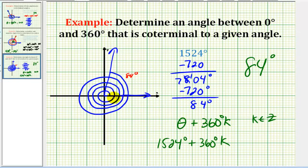And since we had four complete revolutions, if we let k equal negative four, we'd have 360 degrees times negative four, which is equal to negative 1440, which would give us a sum of 84 degrees.